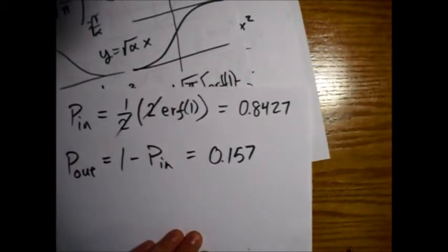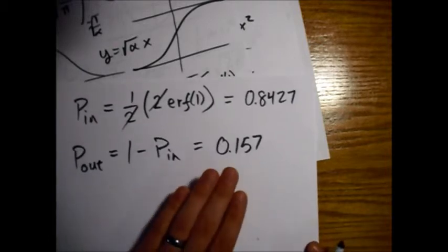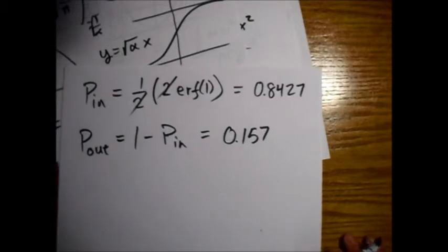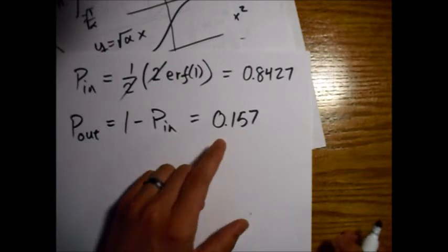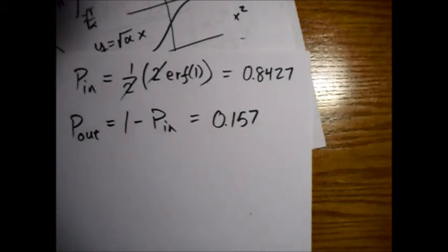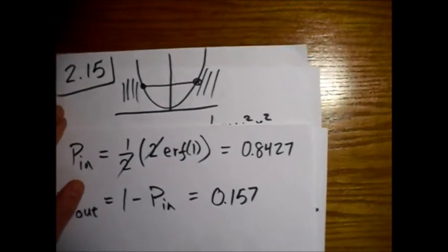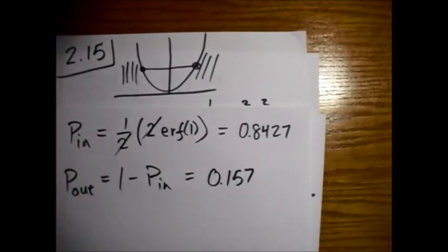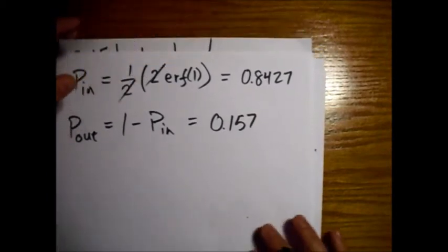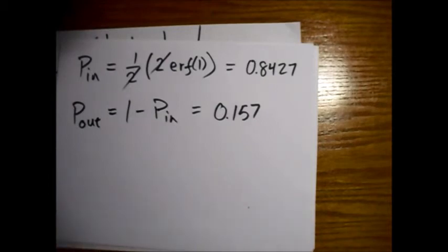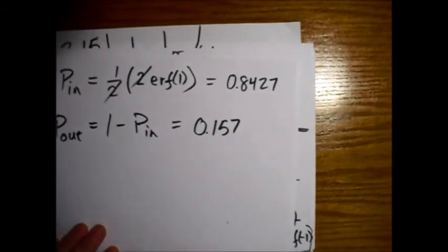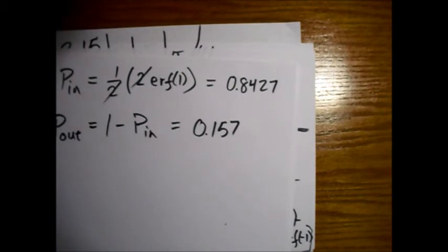So that's the probability that the quantum mechanical simple harmonic oscillator will break the rules of classical mechanics — you'll actually find it tunneling into the wall of the potential. Picturing a mass on a spring, it's stretching the spring further than it should for the energy it has. About 15 to 16 percent — almost a fifth of the time — you'll find it outside of where classical mechanics says it should be. Kind of a cool result.